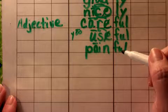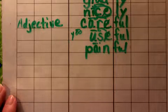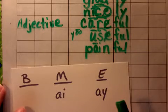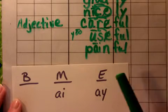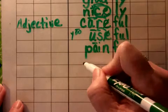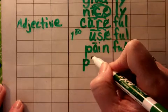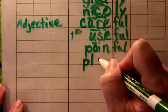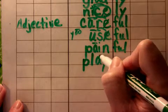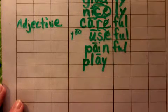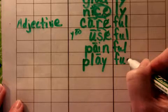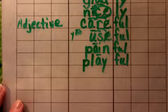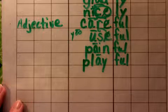The next word is play. Hear the A sound at the end — A can be spelled with A-Y. P-L-A-Y. A-Y says the long A sound. The suffix -ful is the ending: playful, full of play.